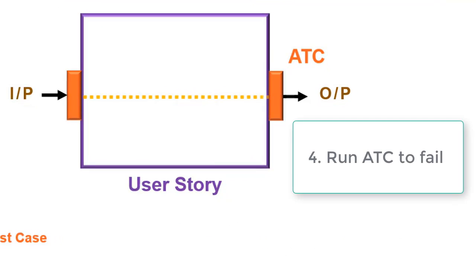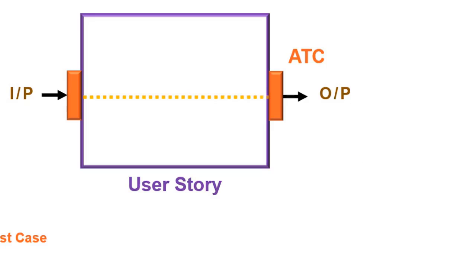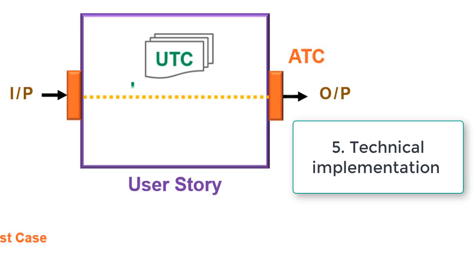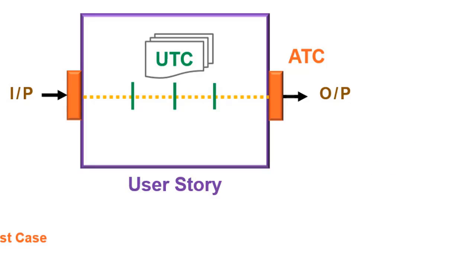Step 4: Run the acceptance test case to fail, which seems obvious since there is no implementation yet. Step 5: The dev team writes the technical implementation. Here the TDD process can be applied. One business story can be comprised of multiple technical units. So as the unit test cases start passing, the acceptance test cases for the story also start passing. Thus the development of the story is driven by the acceptance test cases.